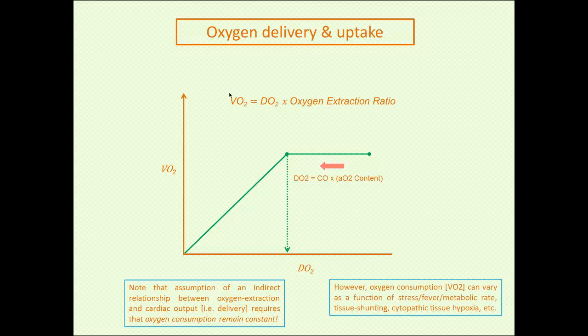VO2 can vary for many reasons beyond changes in delivery. For example, if you're pushing blood through physiologically inert tissues—say a sedated and paralyzed septic patient whose muscle is not very active—your VO2 will actually appear to go down. If VO2 goes down and you're utilizing less oxygen, your mixed venous blood will return higher than expected. This is the idea of tissue shunting: blood going through metabolically inert tissue.